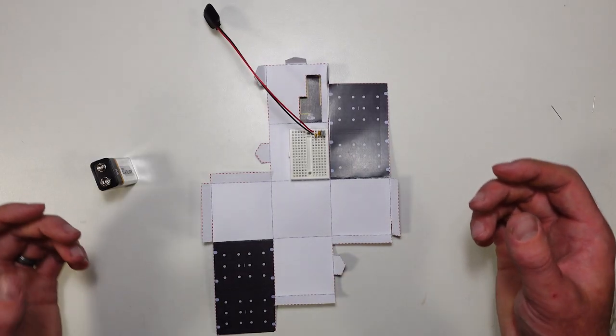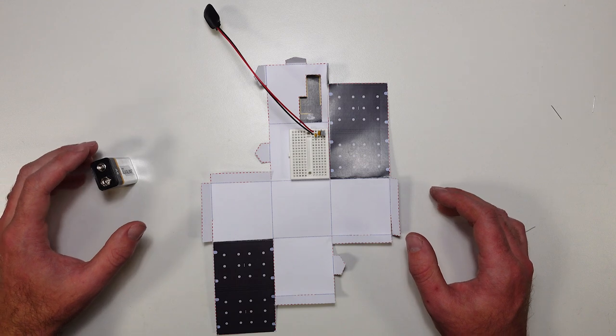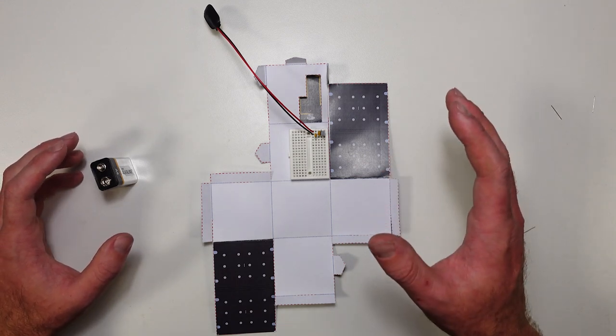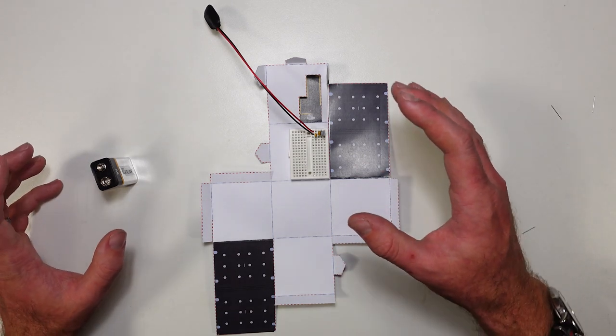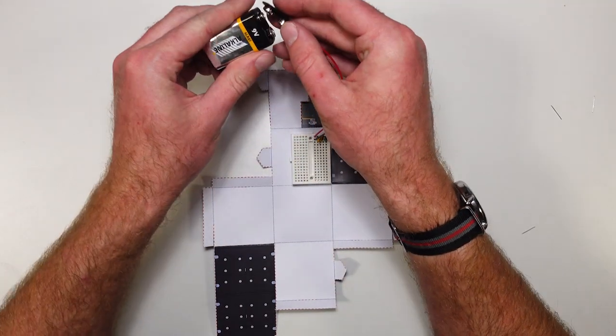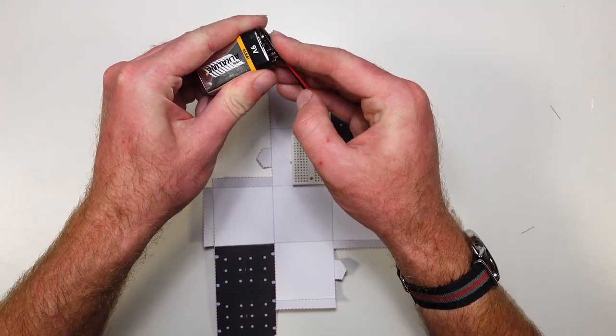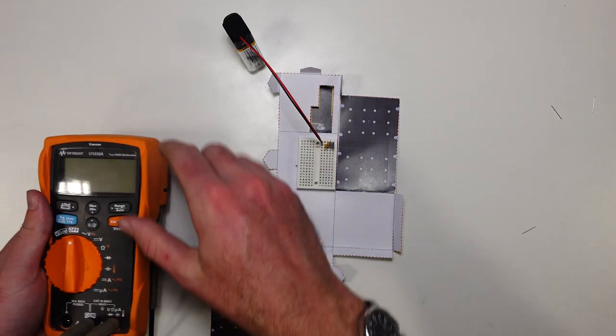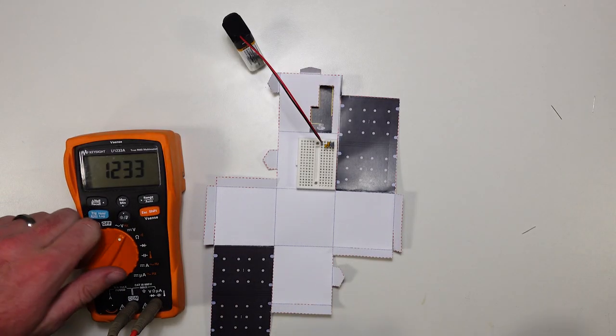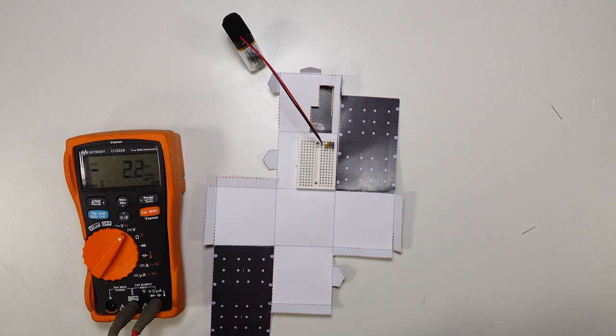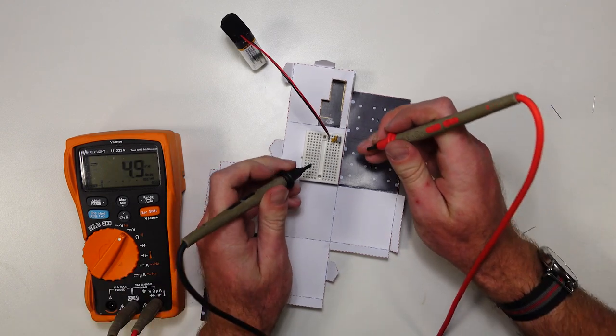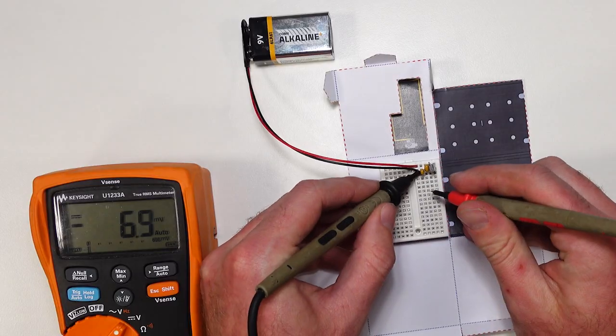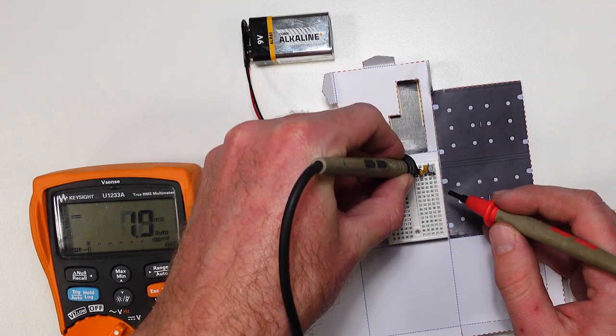So we are just about ready to give our CubeSat a little brain. But before we do that, we should really test that we've got this first little power system working. So I'm going to whack our nine volt battery on here, and I'm going to grab our multimeter and stick it onto DC volts. Okay, here we go. Moment of truth.